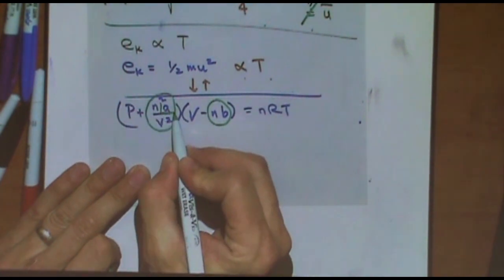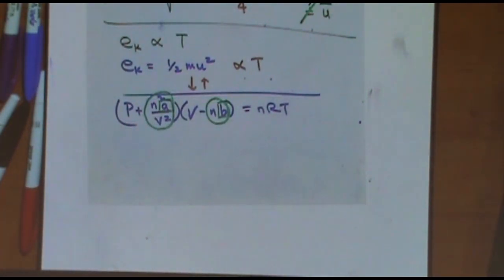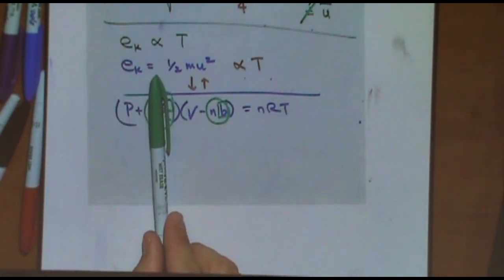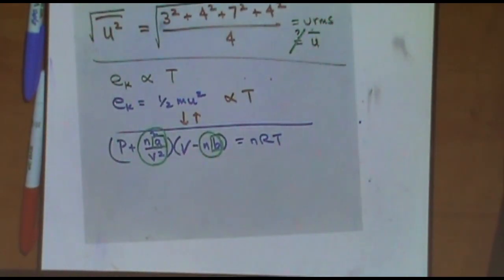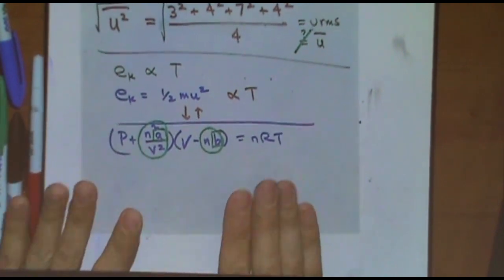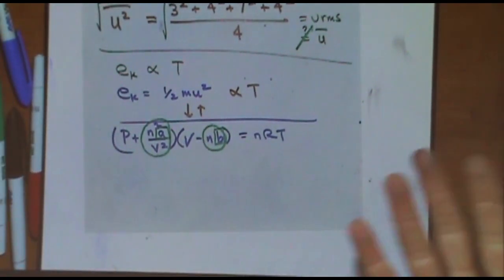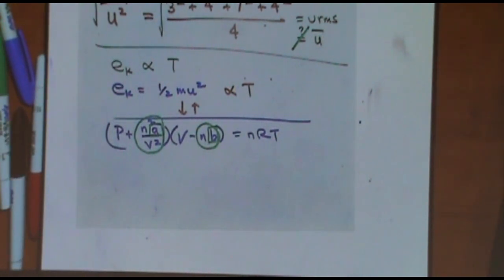For real gases we use the Van der Waals equation of state. Van der Waals accounted for a pressure correction - for high pressure and the attraction between molecules - and a volume correction, meaning the molecules do take up volume. Notice these two variables: A and B are constants for a given gas. For an ideal gas, A and B would be zero or close to zero. If A is zero, that term drops out; if B is zero, that term drops out, and you're just left with the ideal gas law. The more real the gas gets, the higher the value of A and B, and you have to use this equation.